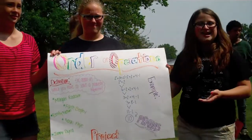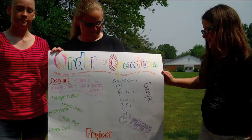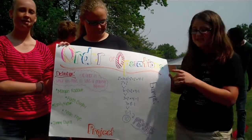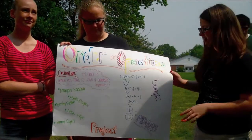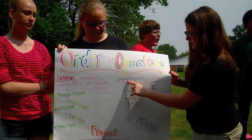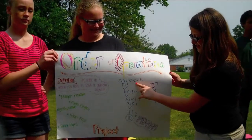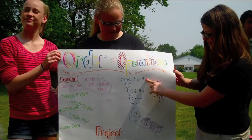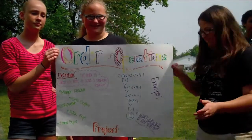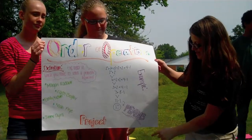So, our example of order of operations is 2 squared plus parentheses 4 minus 2 parentheses divided by 2 plus 2 times 4 minus 1. Sounds difficult, but it's easy because you can just use PEMDAS.